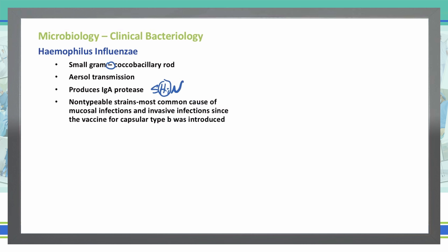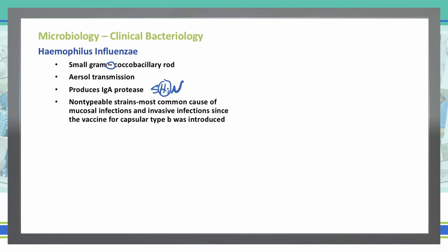The most common type of Haemophilus influenzae infection is an unencapsulated or non-typable strain. The reason we typically see non-typable strains as most common now is because we have a vaccine for the capsular type B, which decreases the risk of type B infection. However, some non-typable strains have become more prominent because they are not covered under the vaccine.